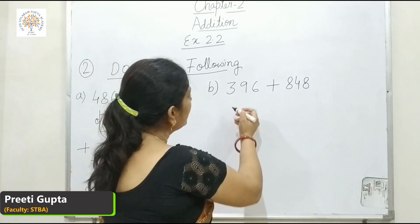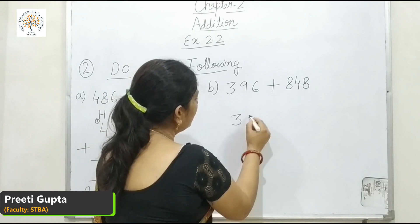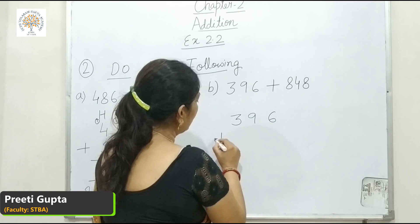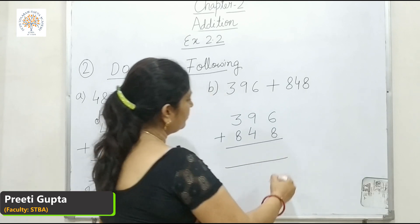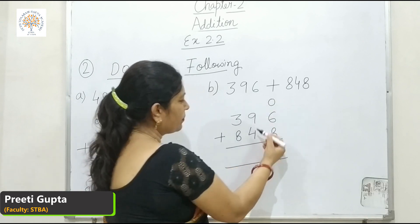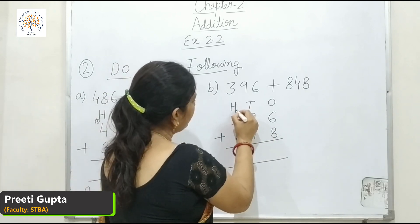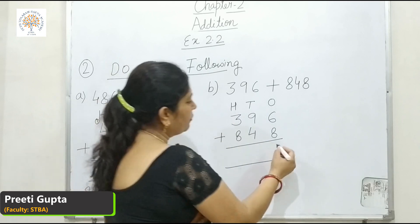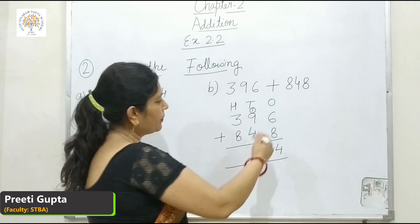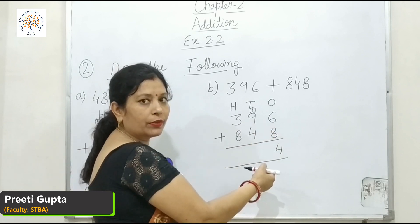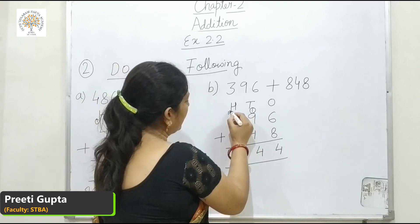Now part B: 396 plus 848. 8 and 6 are in the 1's place, 9 and 4 are in the 10's place, and 8 and 3 are in the 100's place. 8 and 6 is 14 — we write 4 here. 9 plus 4 is 13, and 13 plus 1 is 14 — write 4 here and carry 1 here.